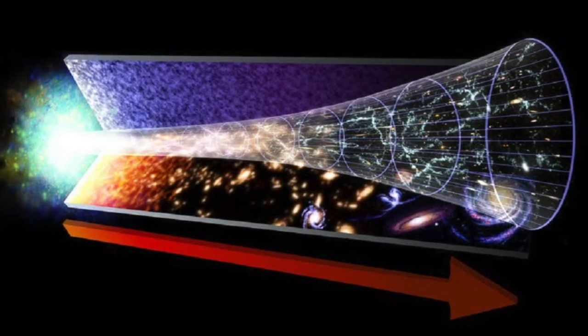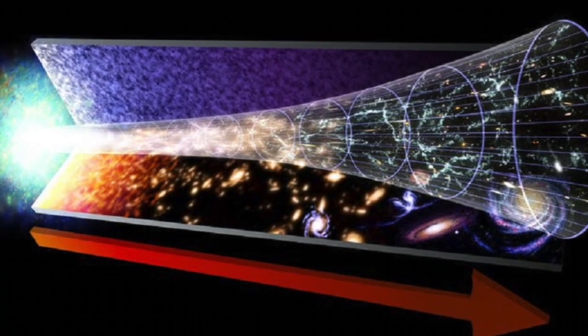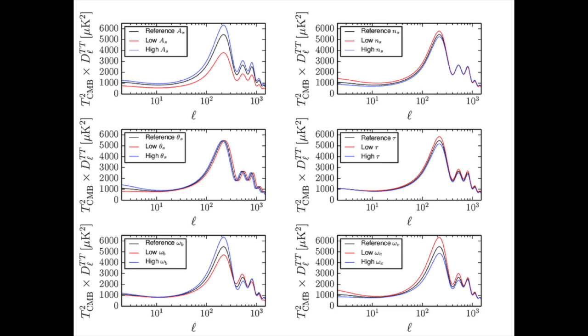So, just to recap, if the Big Bang did not happen, the CMB power spectrum would look completely different than our actual observations of it. It's the same for dark matter, dark energy, inflation, and a starting moment when all these primordial fluctuations were equal.